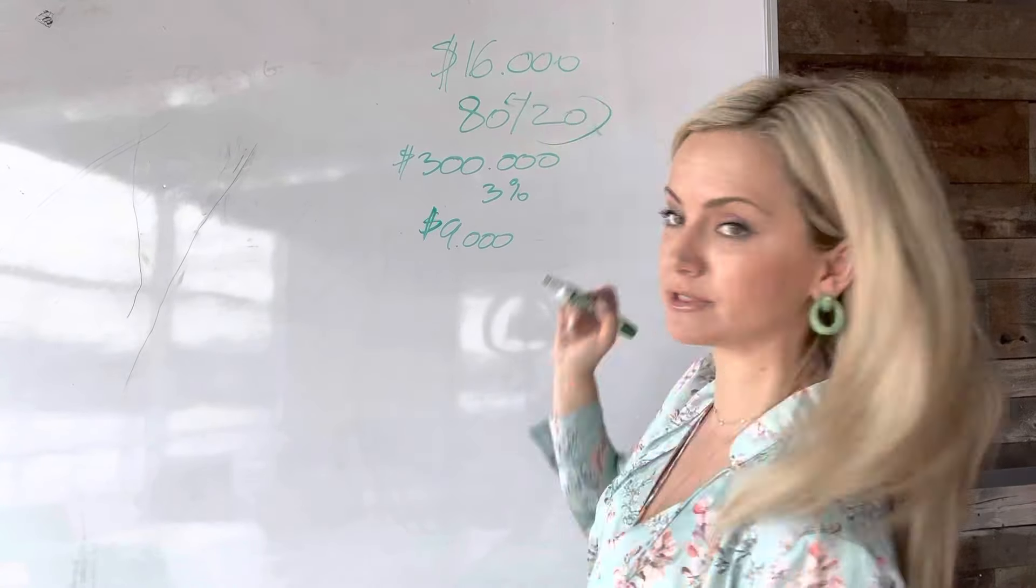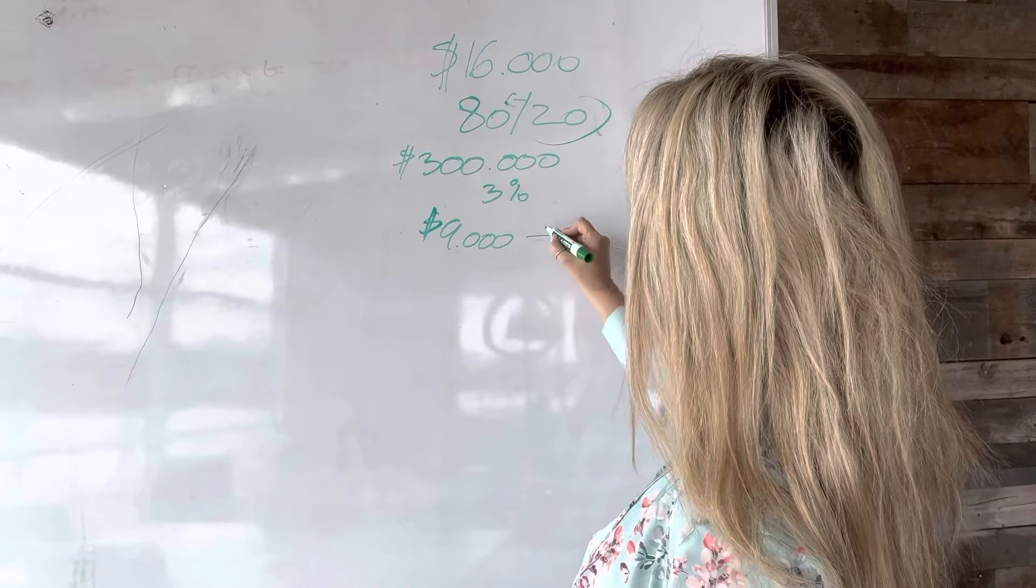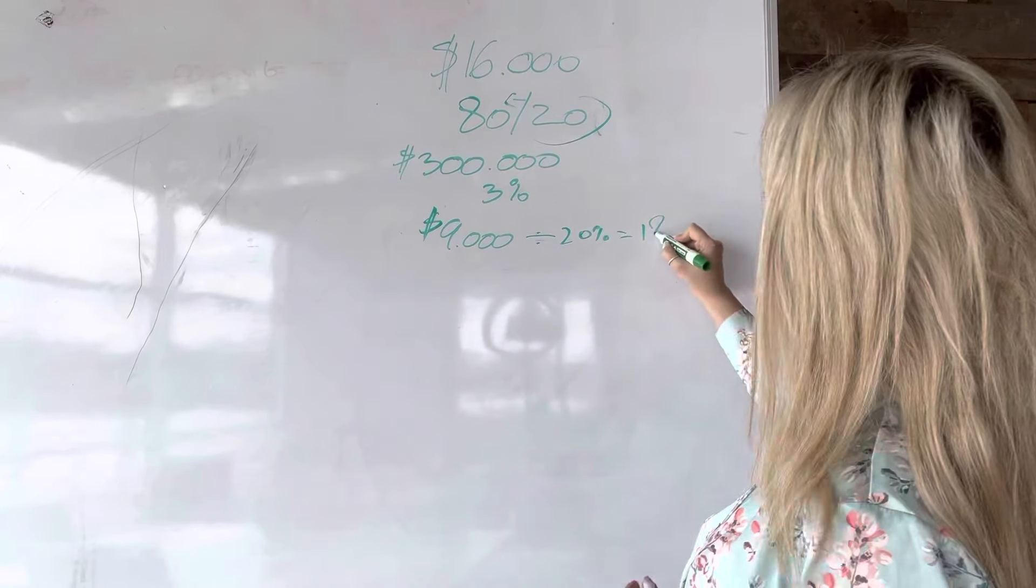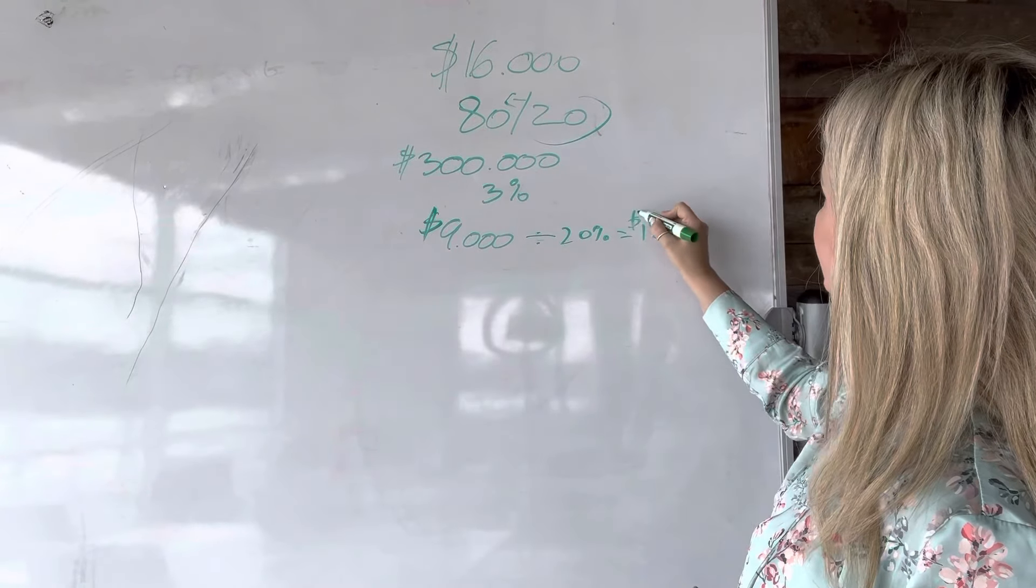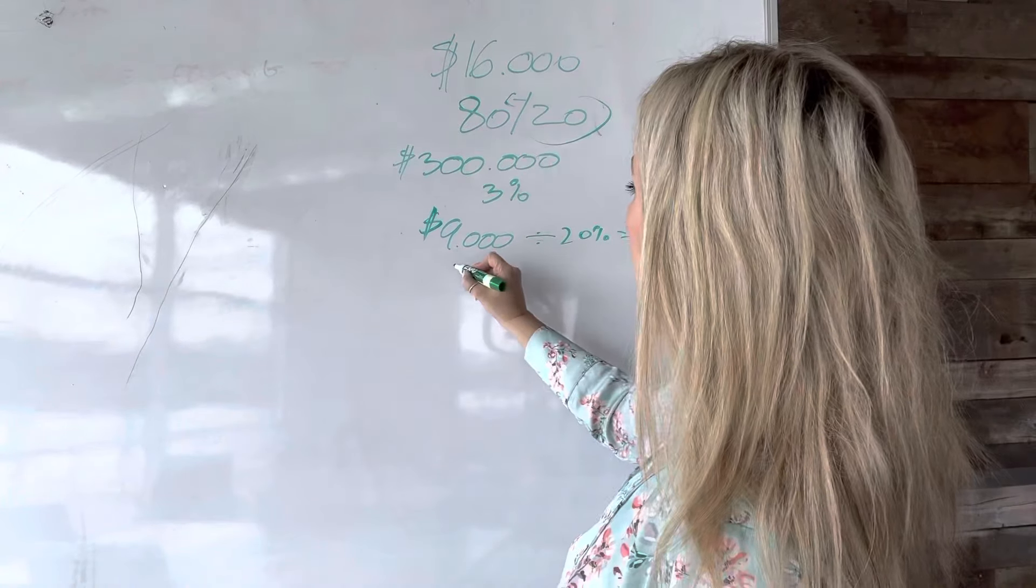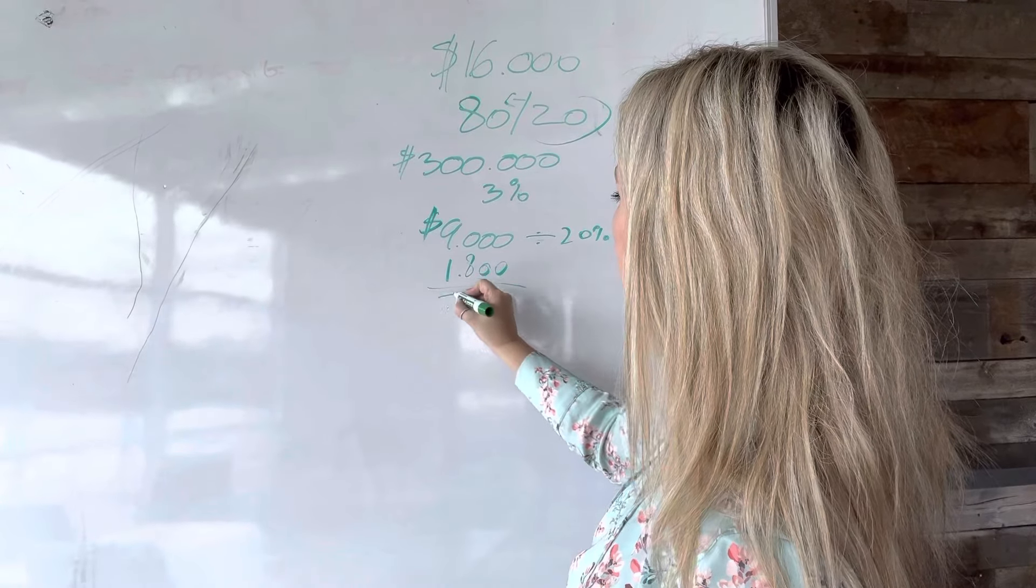You get to keep 80% with my math, with the brokers that I'm with. So that means out of this, you're going to take out 20%, which is $1,800, and this $1,800 will go to your broker. So out of your $9,000, we're going to take that $1,800 out. That will leave you with $7,200.